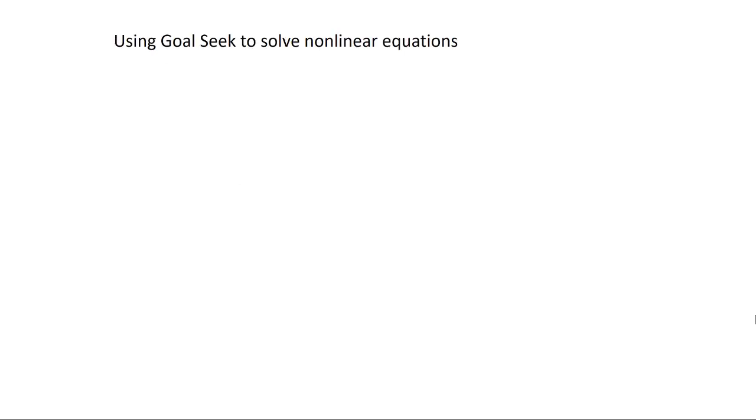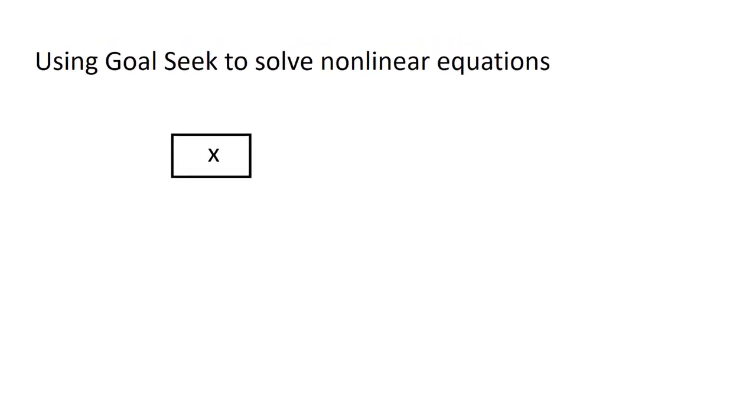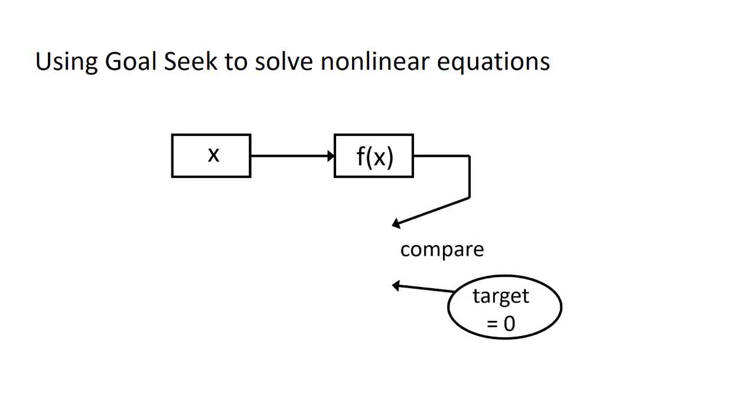There's a tool built into Excel that quite a few of you are probably already aware of. And that's the Goal Seek tool. We can use this to solve nonlinear equations. The way Goal Seek works is you start with an input cell. And you calculate the output. And this is usually through some sort of mathematical relationship. And then you compare. You compare the function value, f of x, to some target. And a lot of times the target is 0. But the target does not have to be 0.